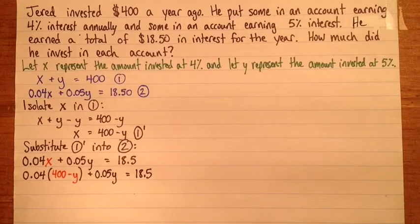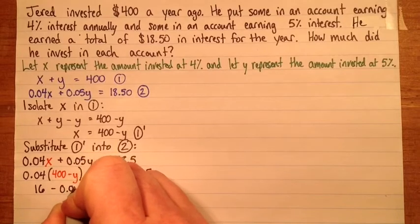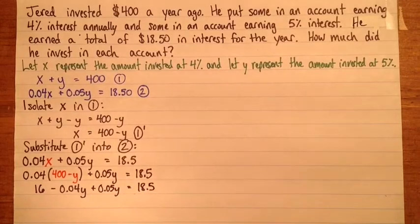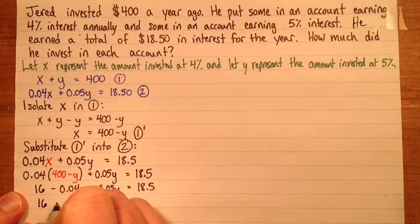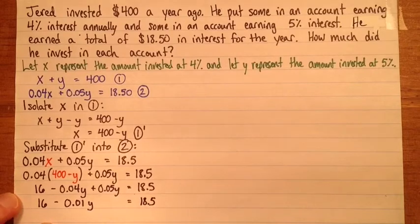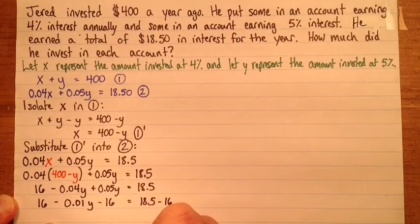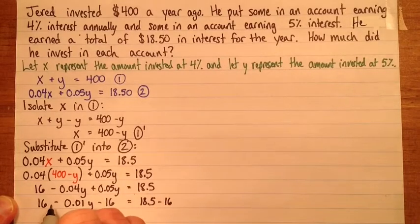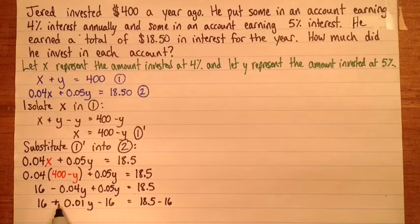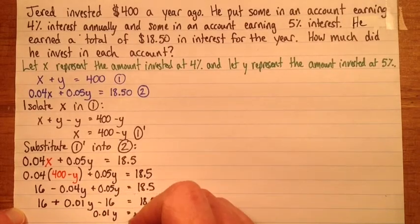Okay, now I'm just going to carefully simplify this. 0.04 times 400 is 16. Minus 0.04Y plus 0.05Y equals 18.5. And we'll have 16, this would be negative 0.04Y plus 0.05Y, so it should be plus 0.01Y. So I have 16 plus 0.01Y equals 18.5. And I'll subtract 16 from both sides. So I have 0.01Y equals 2.5.